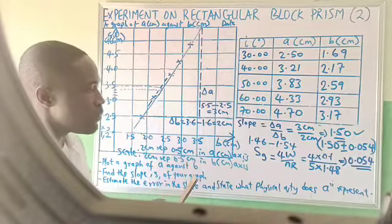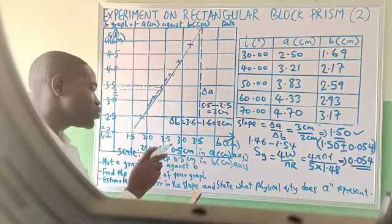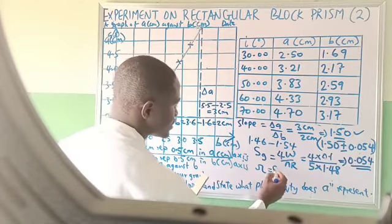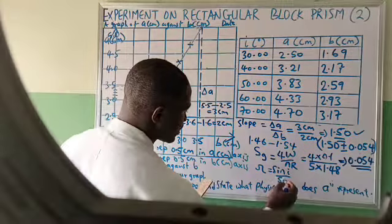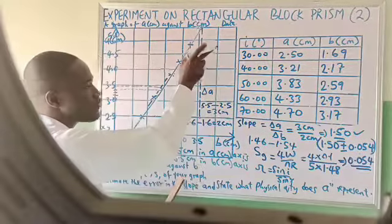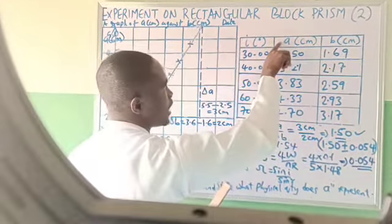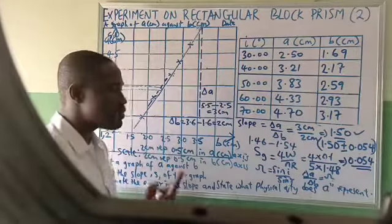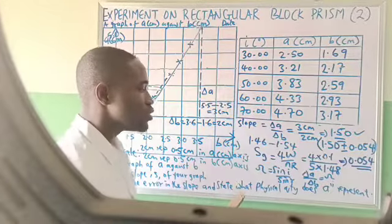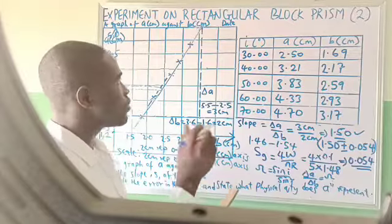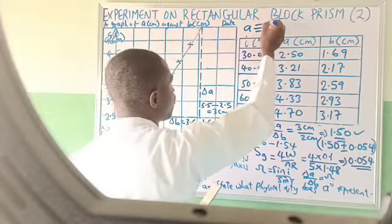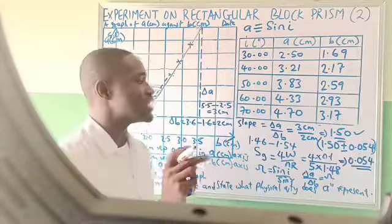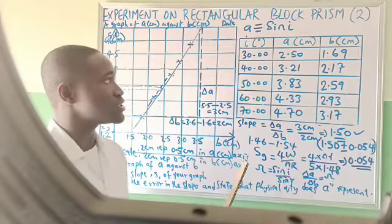Now they say: state what physical quantity A represents. From Snell's law, sin(i) over sin(r) gives the refractive index. From this experiment, A over B — or change in A over change in B — gives the refractive index. That means A is equivalent to sin(i), the sine of the angle of incidence. That is the physical quantity A represents.